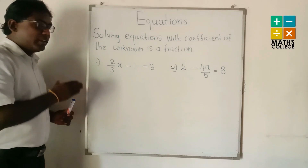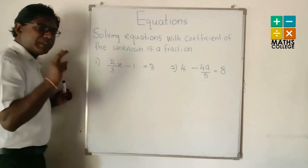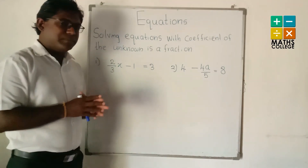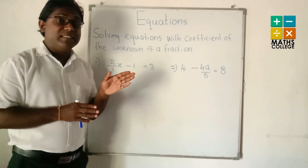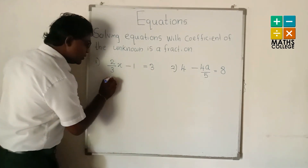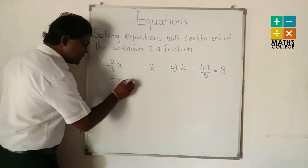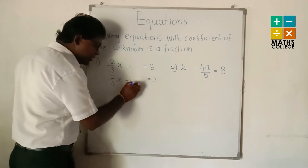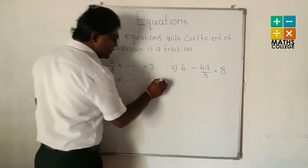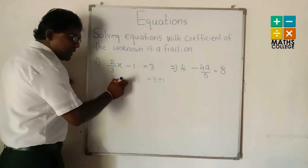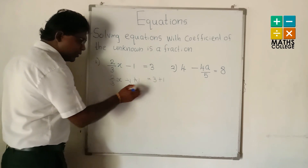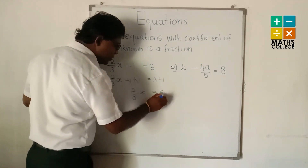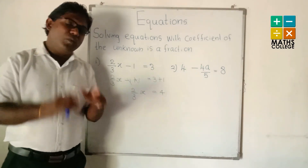For example, the coefficient of x is 2/3, and the coefficient of A is 4/5. We have fractions as the coefficient of the unknown term. How to solve these? Look at the board carefully. Firstly, we apply the opposite operations to both sides. The operation here is subtraction, so the opposite operation is addition. We have (2/3)x - 1 = 3, so we add 1 to both sides — minus 1 plus 1 cancels — leaving (2/3)x = 4.